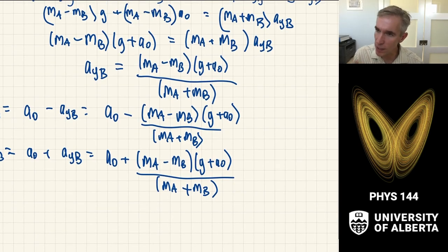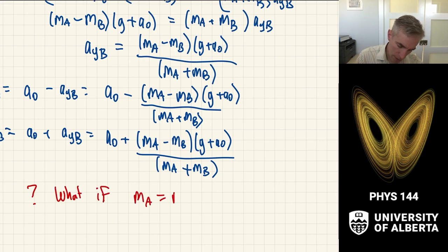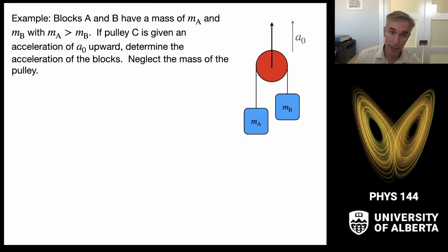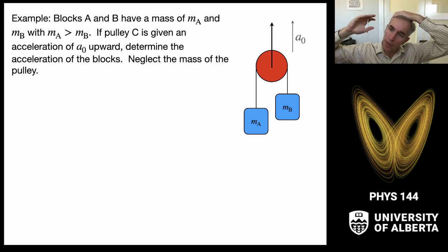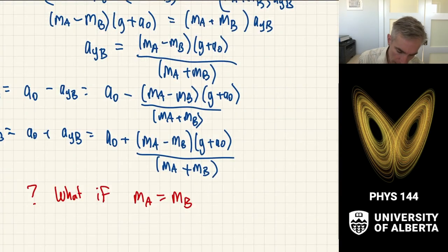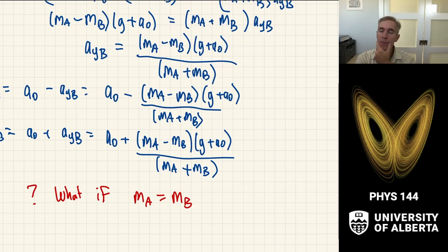We can check this with limiting cases. First, what if m_A equals m_B? Physically, the two equal masses would stay fixed relative to each other and the whole system accelerates upward at A₀. In our formula, the (m_A minus m_B) difference is zero, so the second term drops off and both objects have acceleration A₀. That makes sense.